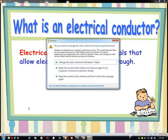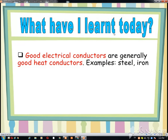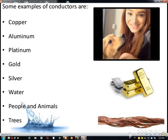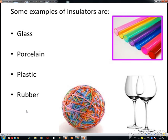An electrical conductor is a substance that allows electricity or heat to pass through it. Examples are copper, aluminum, platinum, gold, silver, and water, as well as animal tissue.